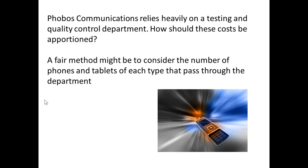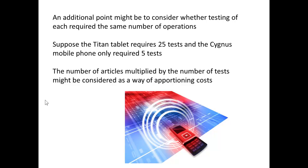Phobos Communications later introduced a testing and quality control department, giving a new reason for apportioning costs. One approach was to consider the number of phones and tablets of each type that passed through the department. They might also consider the number of operations per test — so if a tablet required 25 tests and a phone only 5 tests, you should probably factor that in. Taking the number of articles multiplied by the number of tests could be a good way of apportioning costs there.